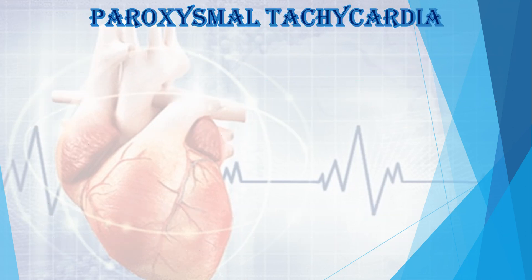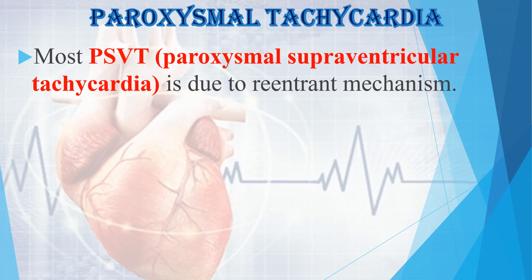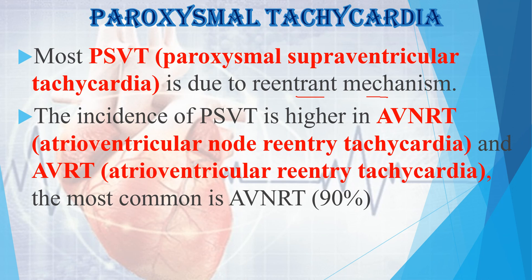Next is Paroxysmal Tachycardia. Most Paroxysmal Supraventricular Tachycardia is due to a re-entrant mechanism. The incidence of Paroxysmal Supraventricular Tachycardia is higher in Atrioventricular Node Re-entrant Tachycardia (AVNRT) and Atrioventricular Re-entrant Tachycardia (AVRT). The most common is AVNRT, accounting for about 90% of cases.